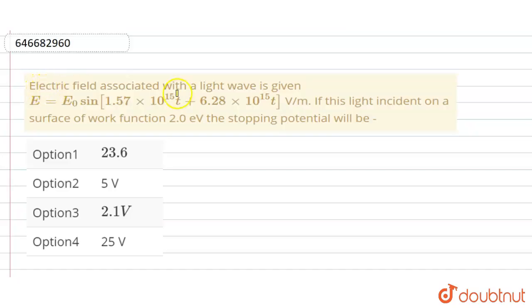Hello everyone. Electric field associated with a light wave is given E equals E₀ sine(1.57 × 10¹⁵t + 6.28 × 10¹⁵t) volts per meter. If this light incident on a surface of work function 2.0 electron volts,